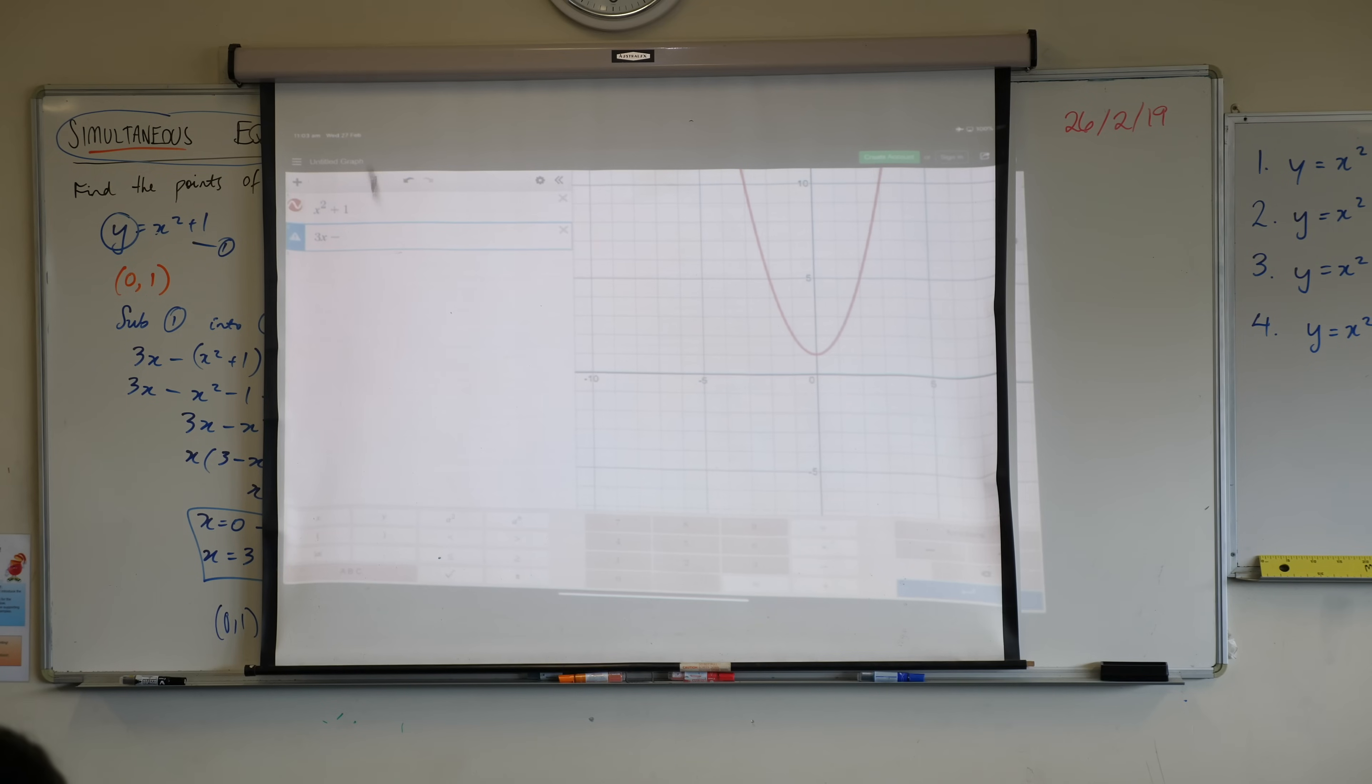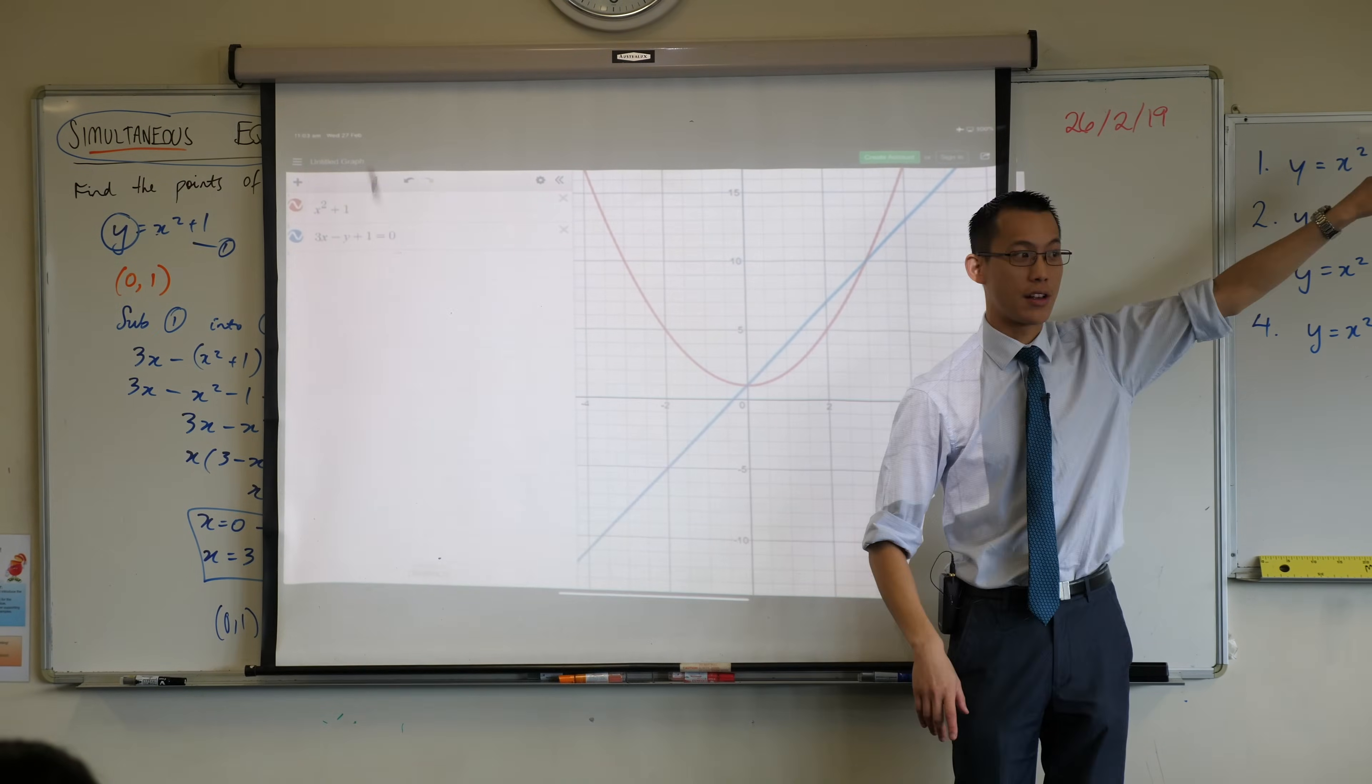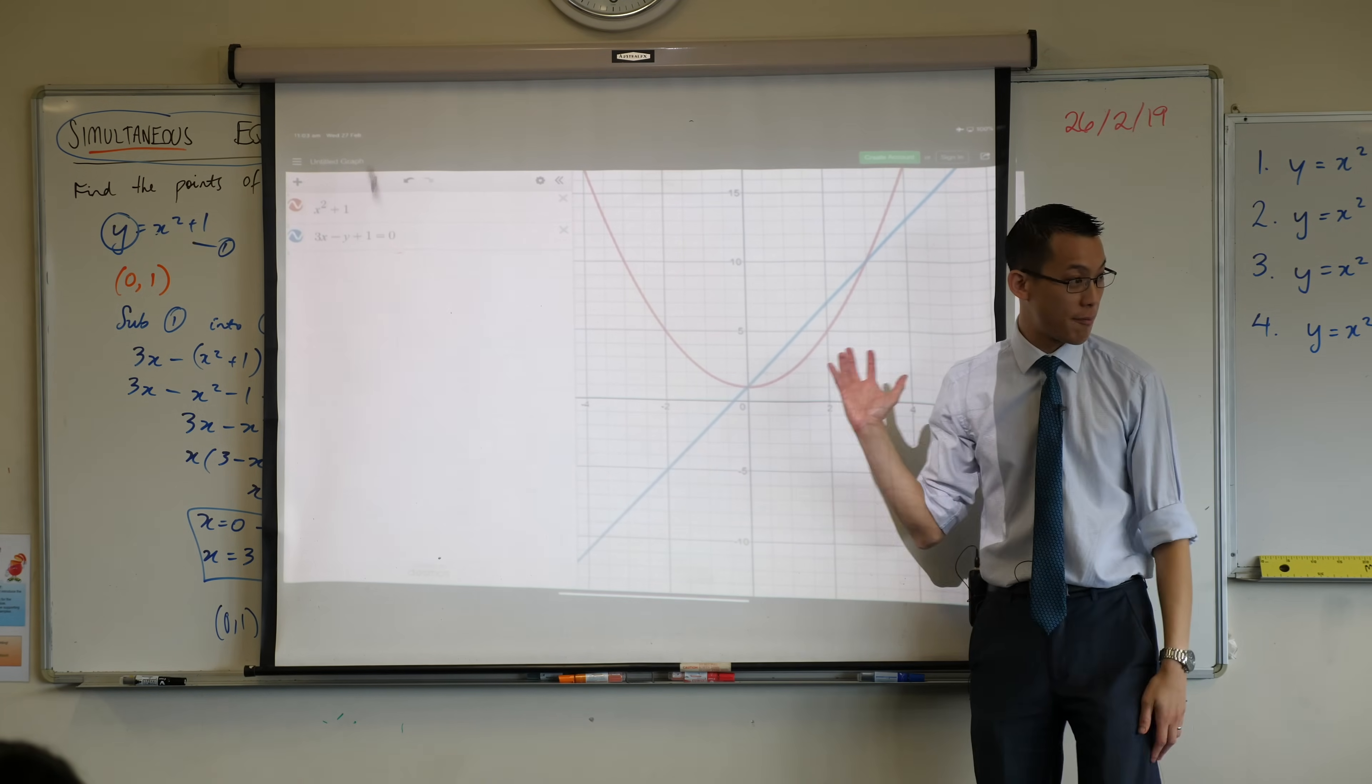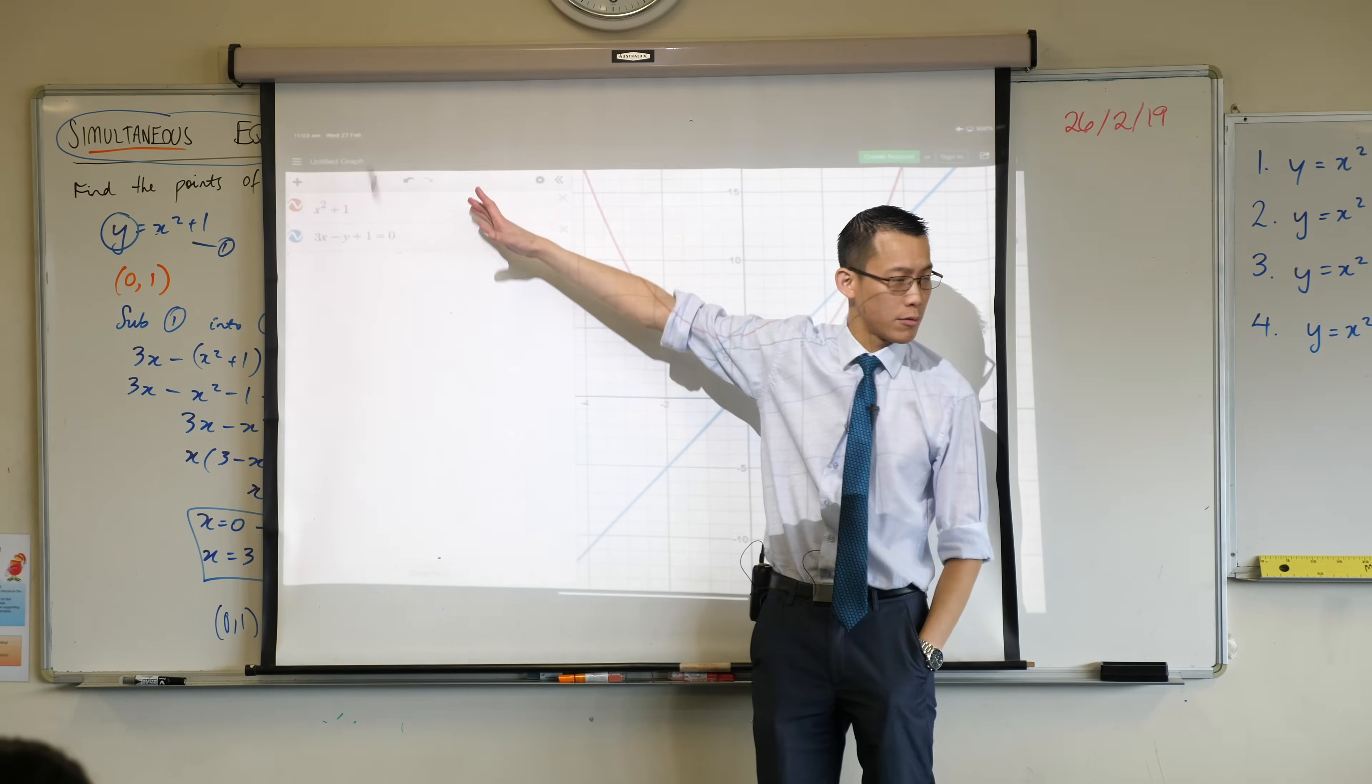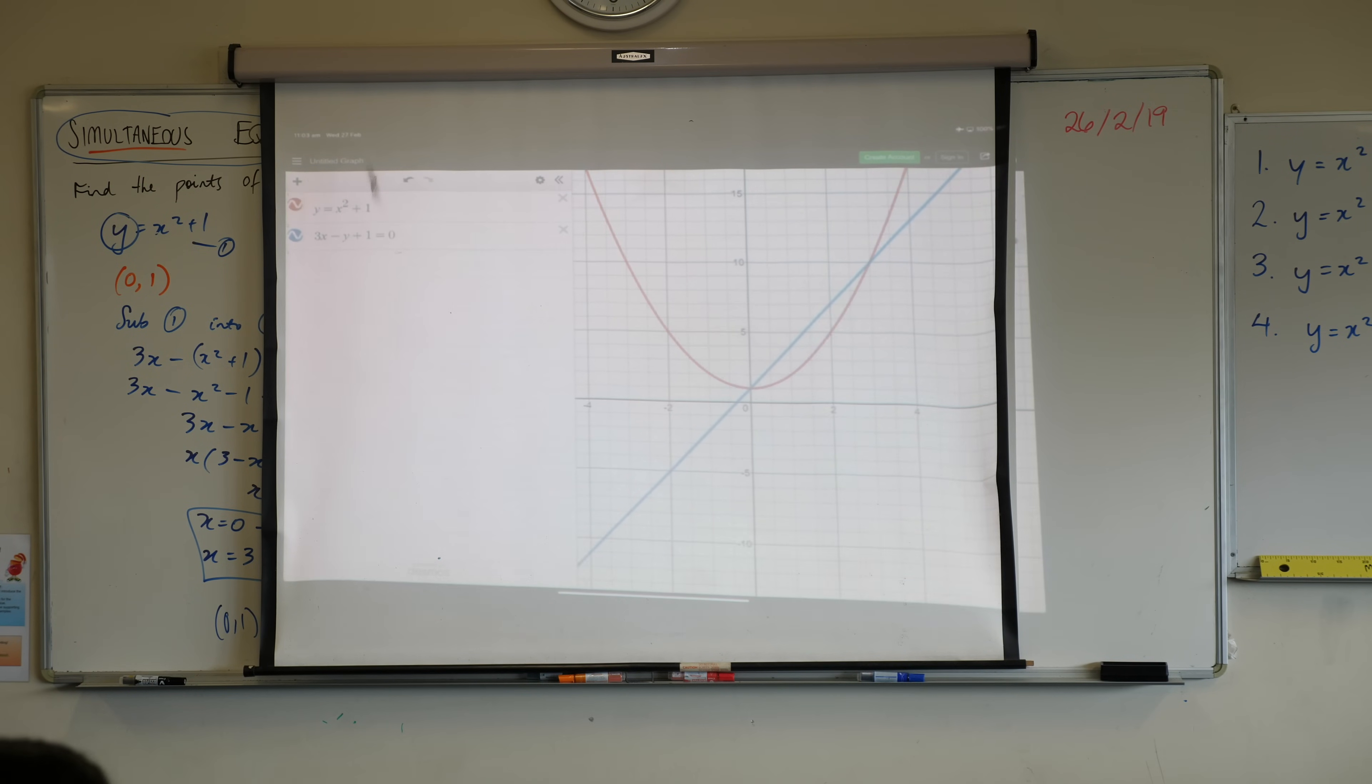This is general form, isn't it? General form, ax plus by plus c, except we've got a 3, a negative 1, and a 1. So, this is what I've got. I've put both of those equations onto here. Actually, I need a y there just to make it complete, but Desmos knows what I was trying to do. There we go.